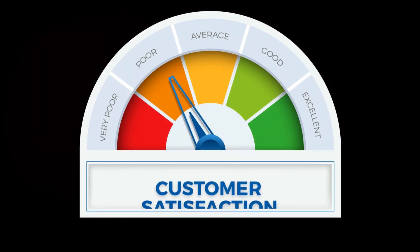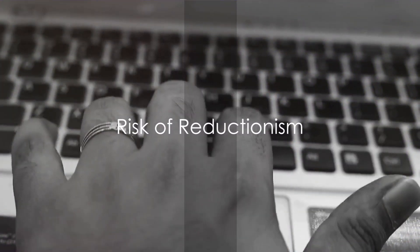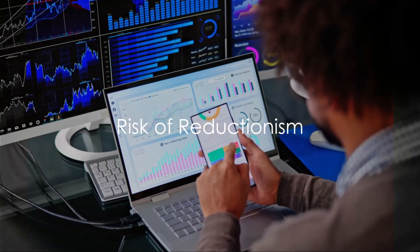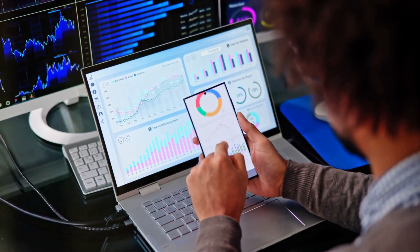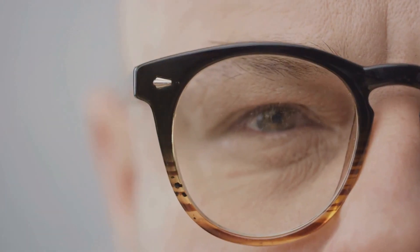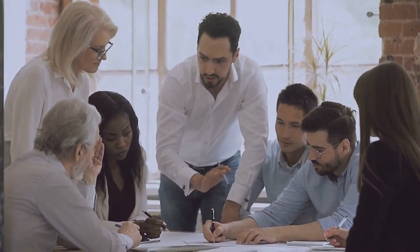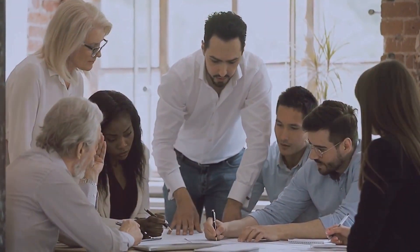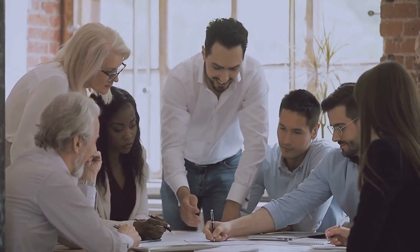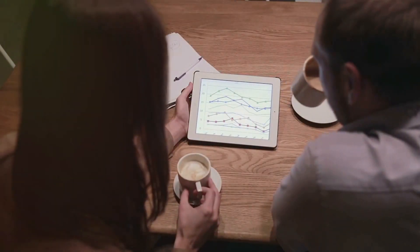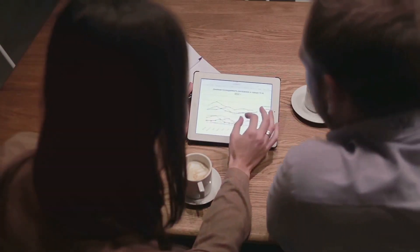Next up is the risk of reductionism. DORA metrics simplify complex processes into a few numbers. This can lead to a narrow focus and a loss of the bigger picture. To counter this, it's essential to use DORA metrics as part of a broader strategy. They provide valuable insights, but they should not be the only source of information.